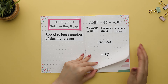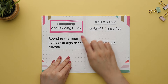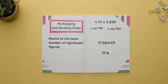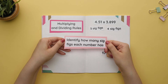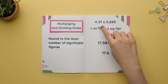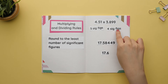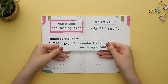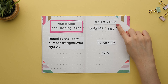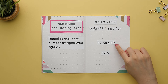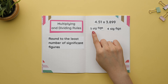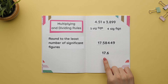When multiplying or dividing numbers, we must always round to the least number of significant figures. Start by identifying how many significant figures each number has. The first number has three sig figs and the second number has four sig figs, based on rule one. Multiply these numbers together, then round to the least number of significant figures, which is three. Round up to 17.6.